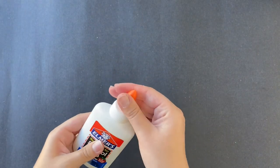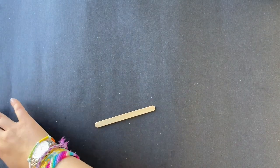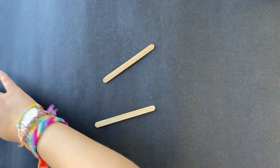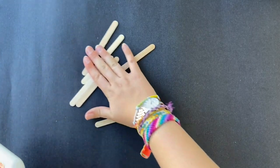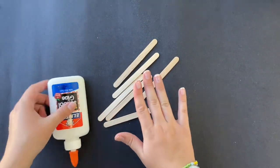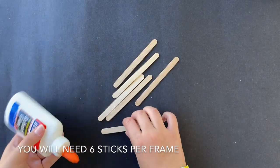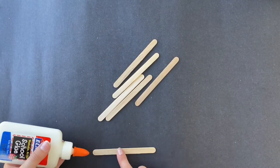Here you see I'm taking my glue, I'm opening the bottle, and I'm going to be grabbing some of my popsicle sticks. You will need six popsicle sticks per window frame for this project.